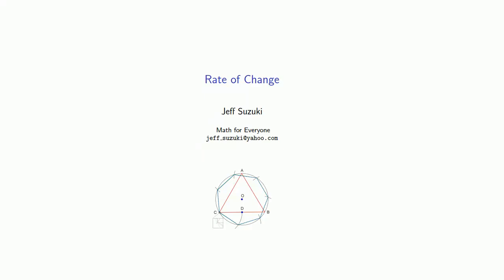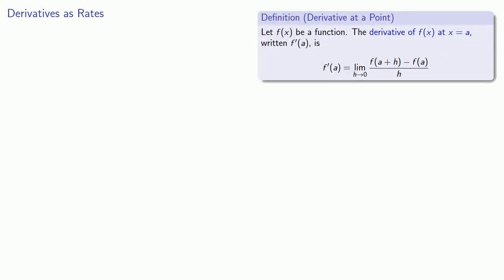Remember we introduced the derivative in connection with finding the instantaneous rate of change. So let's go back and see what we can do with it. According to the definition of the derivative, f prime of x will be the change in f, whatever our function is, divided by the change in x.